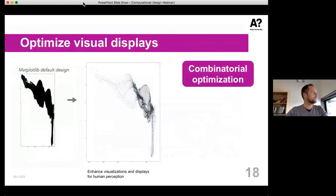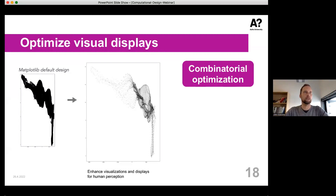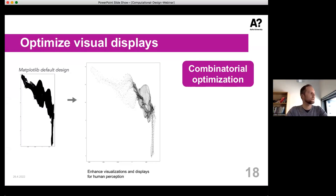We're also increasingly using models of human perception beyond saliency to optimize visual displays — this is called perceptual optimization, originating in computer graphics. For example, a display can be optimized using models of human perception to get the most information out of a complex data visualization, perceiving the inherent structure in your data set. Right now, they've been using combinatorial optimization and sequence-to-sequence learning for this.